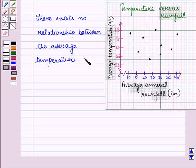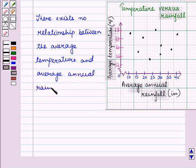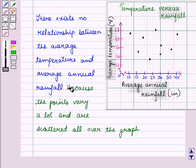So we can write that there is no relationship between the average temperature and average annual rainfall, because the points vary a lot and are scattered all over the graph.